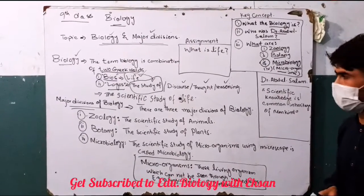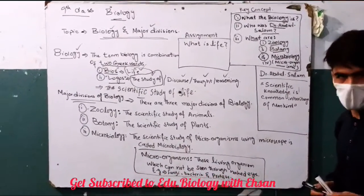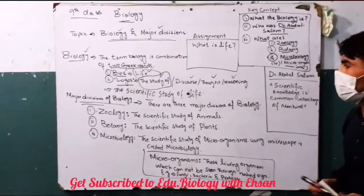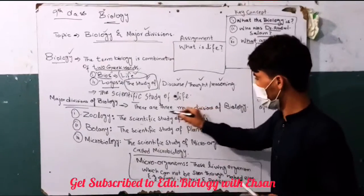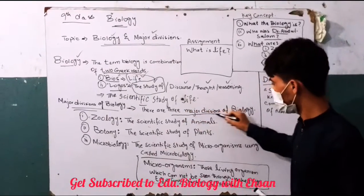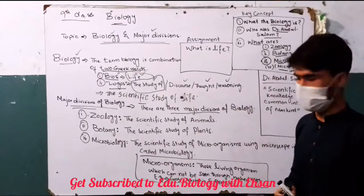Now we can say biology's major divisions. So biology's three major divisions are the following.